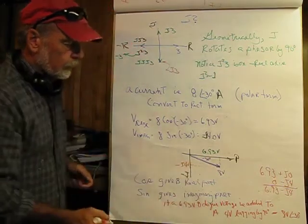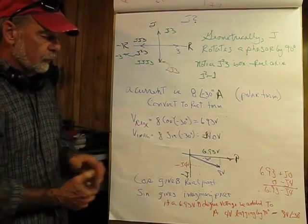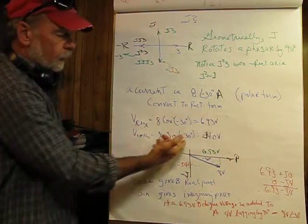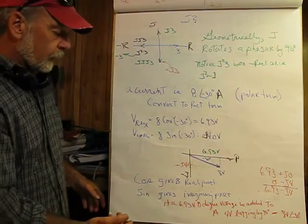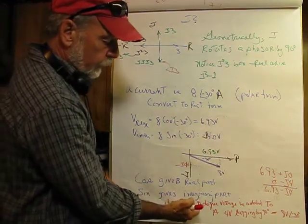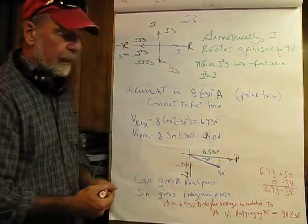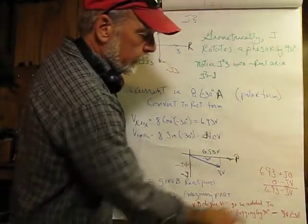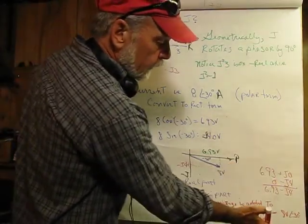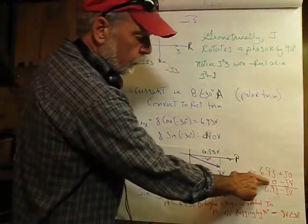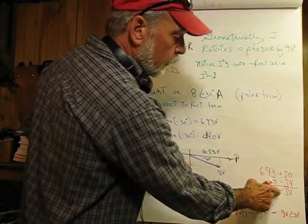The imaginary part is 8 sine of negative 30 degrees, which comes out to be negative j4 volts. So negative j is going to be at 4 volts downward. What we've done is converted polar into rectangular using the cosine and sine operators — the voltage of the hypotenuse and the angle of interest. Cosine gives the real part, sine gives the imaginary part. A 6.93-volt at 0-degree component added to a 4-volt lagging 90-degree component: that's 6.93 plus j0 on the real axis, and 0 minus j4 on the imaginary, giving a combined result of 6.93 minus j4.